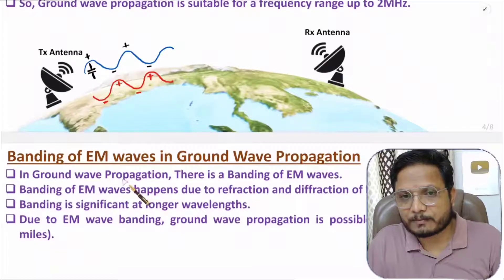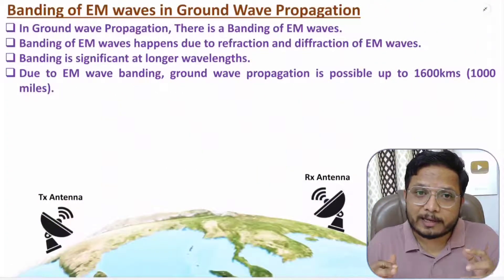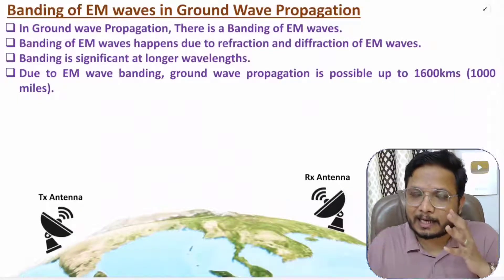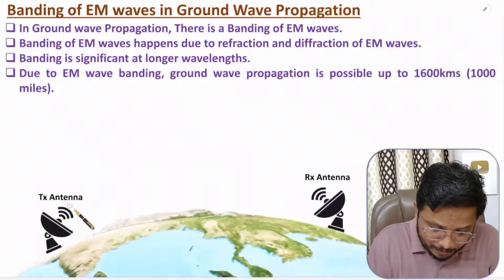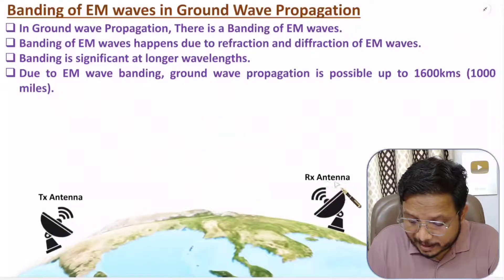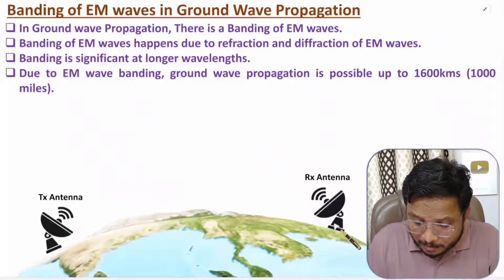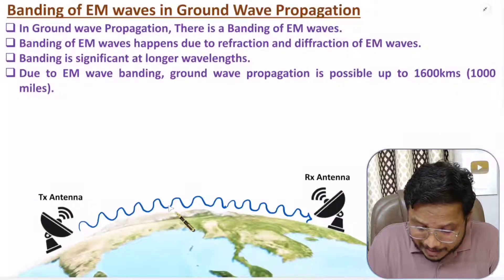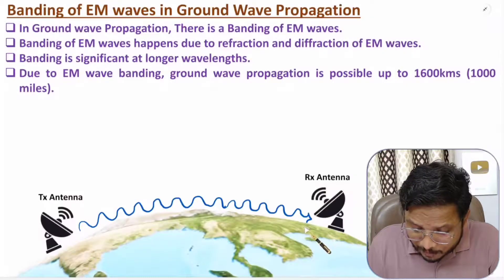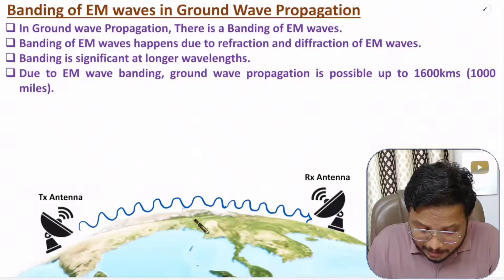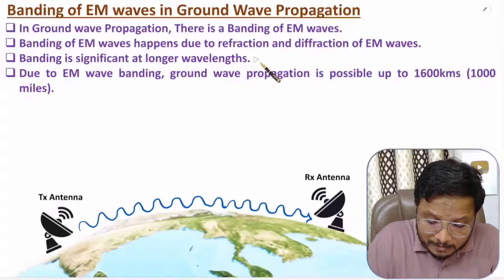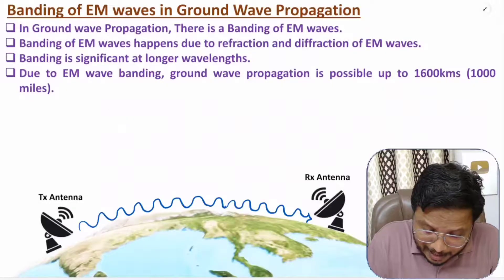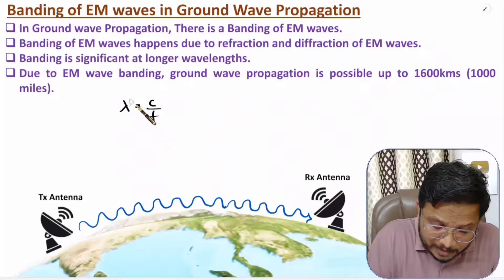Now I'll explain bending of EM waves in ground wave propagation. EM waves are guided along the surface only if there is bending. For example, a transmitting antenna situated at Pakistan and a receiving antenna at China — the EM wave travels along the earth's surface with significant bending. This bending happens because of refraction and diffraction of EM waves, and it is significant at longer wavelengths.